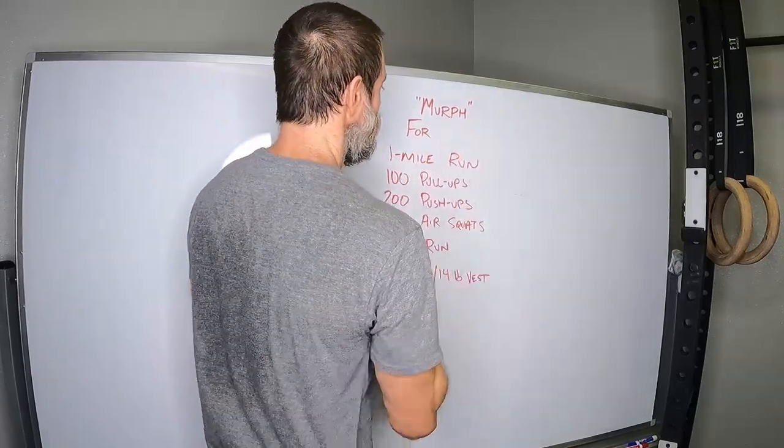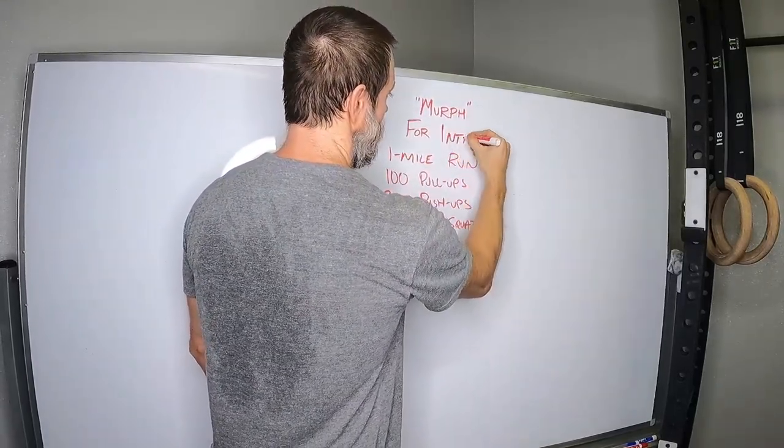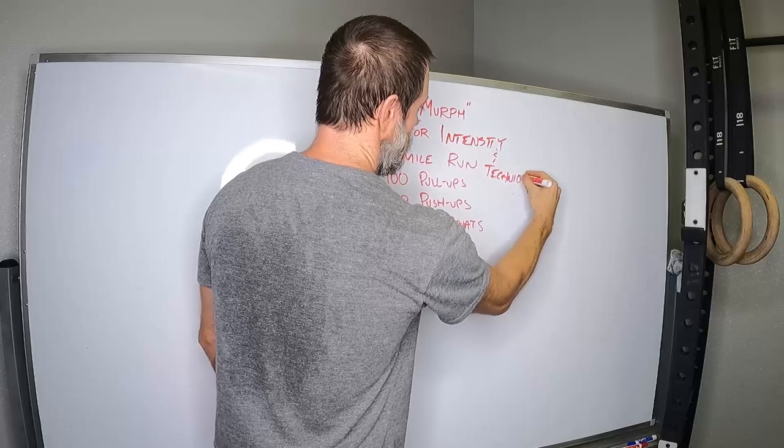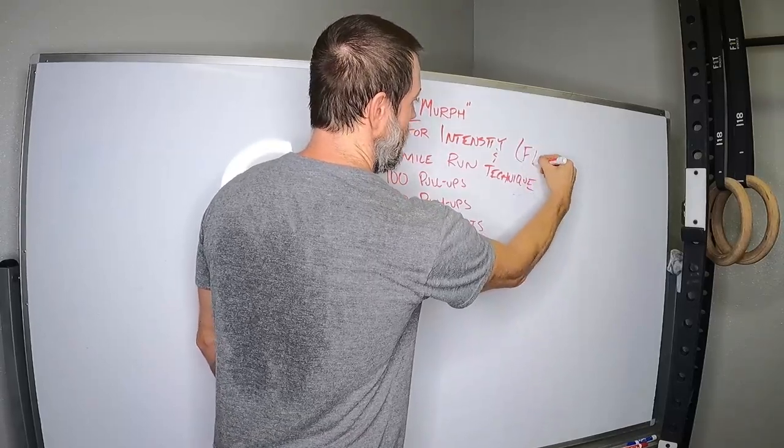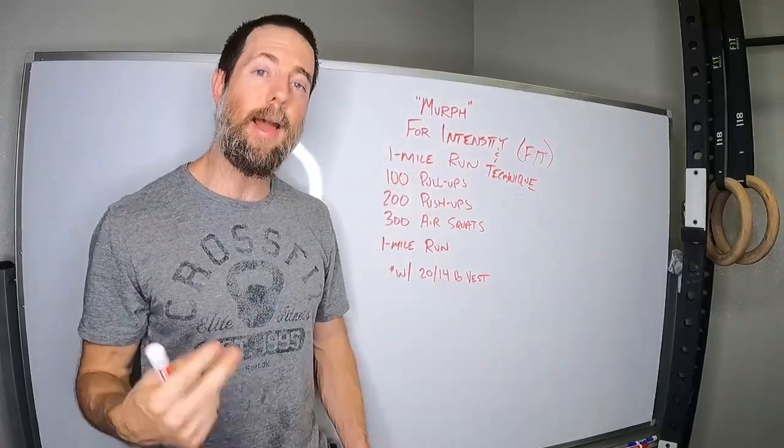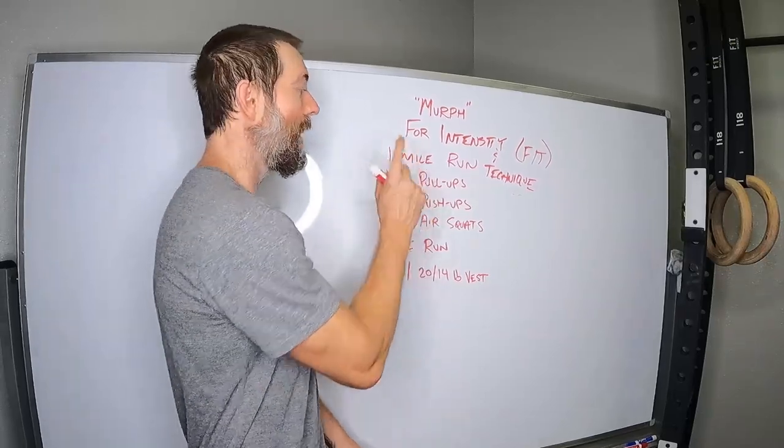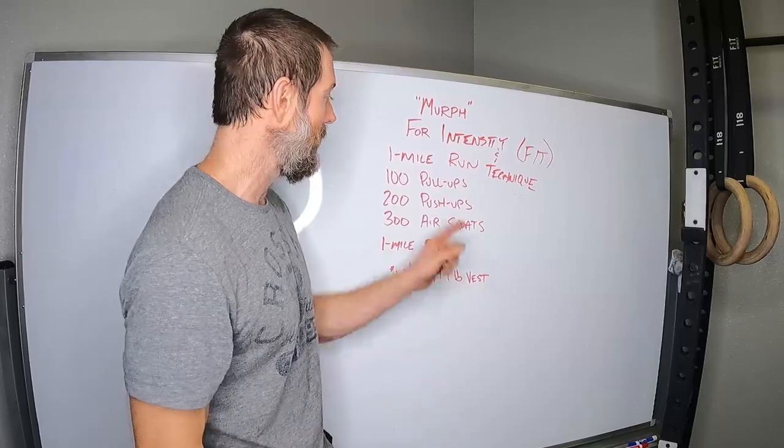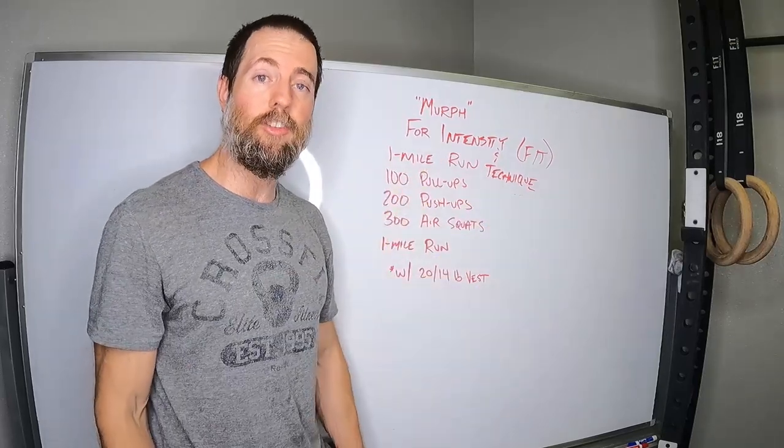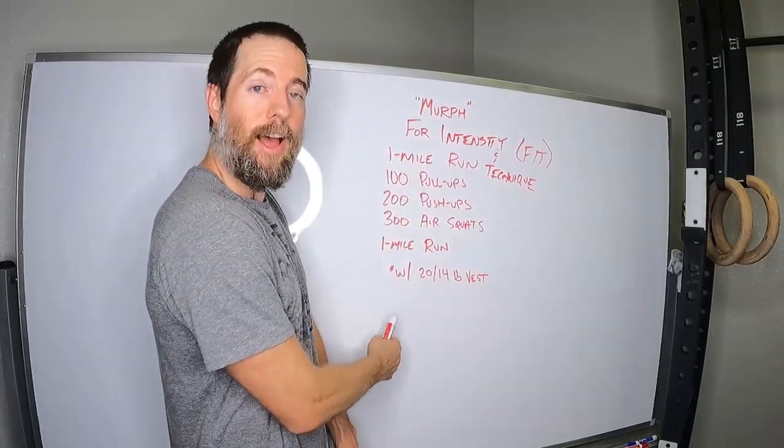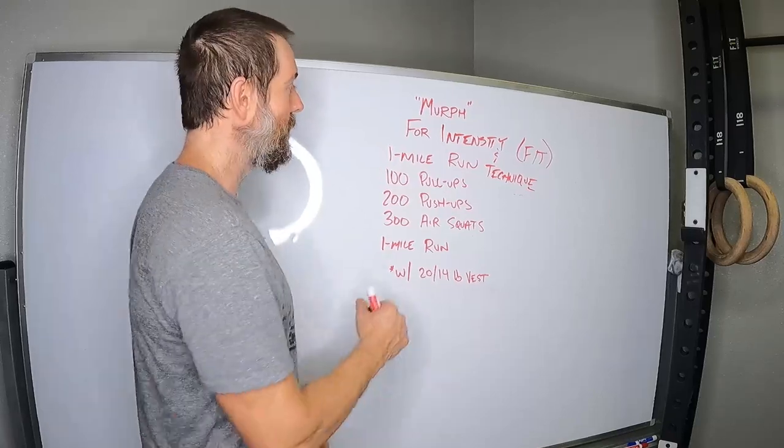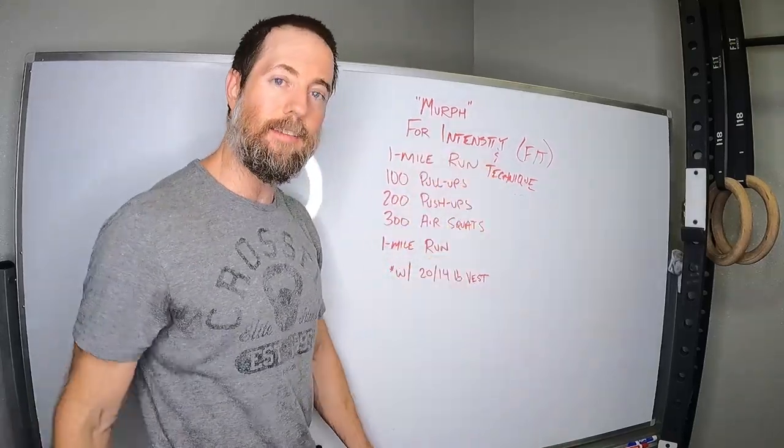So what I want to challenge you to do is really look at the intent of these workouts. Instead of saying for time, let's say something for intensity and technique. Cleverly, how I like to write workouts is FIT. So I don't do Murph for time because if I'm doing it for time, my priorities are out of line. If I'm doing it for time and you give me the standards, I'm going to find every single loophole I can because I know you're going to write my time on the board, and everybody in the gym, all they're going to see is my time.